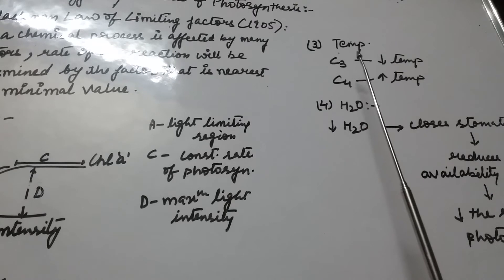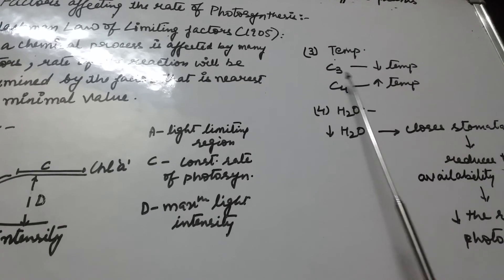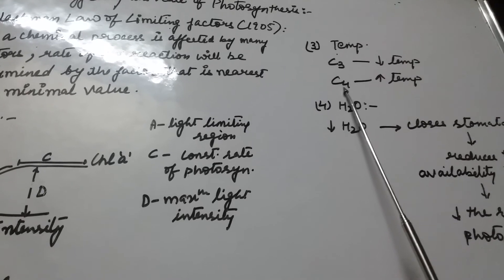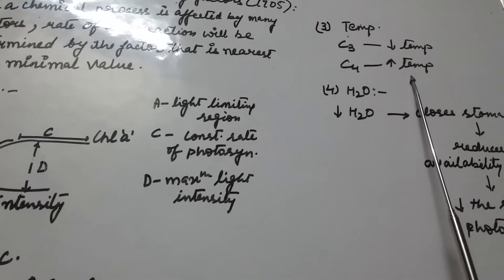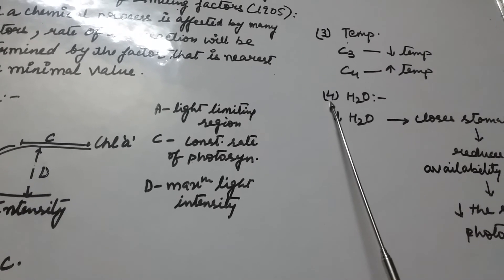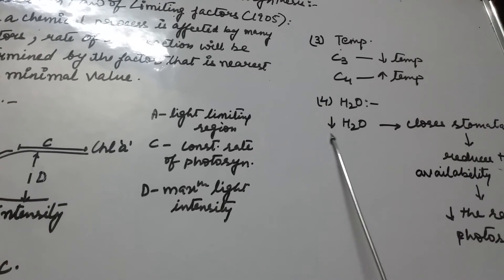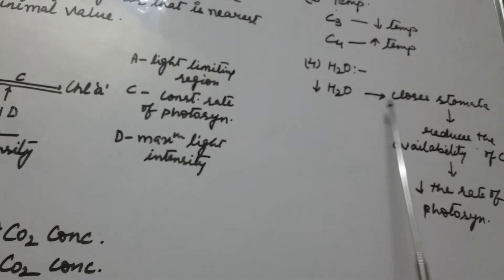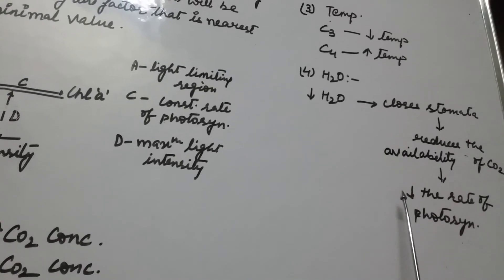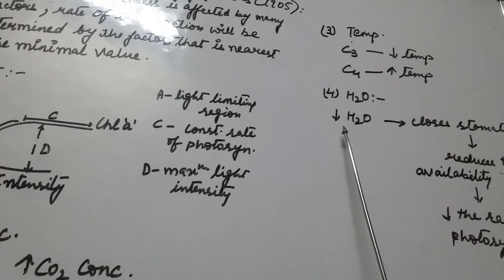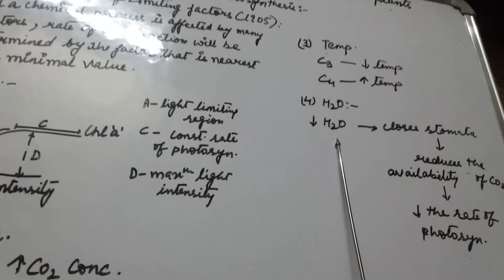Temperature is another factor responsible for the rate of photosynthesis. In C4 plants, a higher temperature is required to initiate photosynthesis. The last factor is the amount of water. If the amount of water decreases, it leads to closure of stomata, which reduces the availability of carbon dioxide, thereby decreasing the rate of photosynthesis. A sufficient amount of water is needed to maintain the rate of photosynthesis.